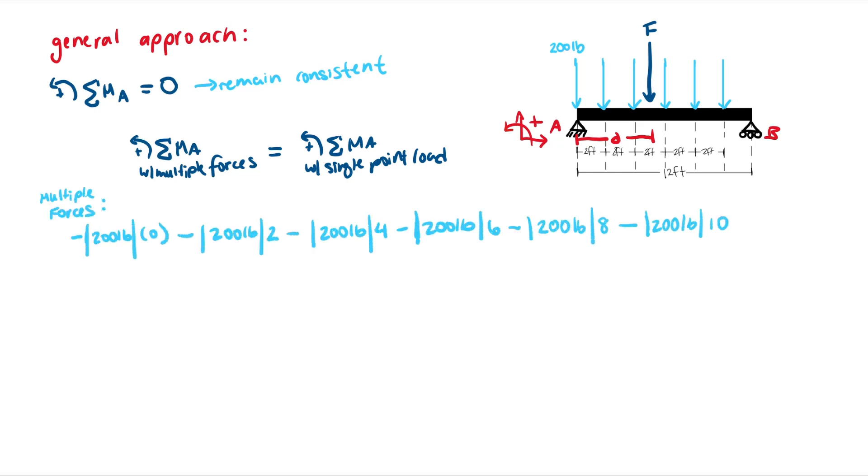If we first start with the multiple forces here, we have our six 200 pounds, each multiplied by their perpendicular distances, which increases by two. The negative sign is because these forces are pushing downwards, creating clockwise moments at point A. So they have to be negative. This is equation one.